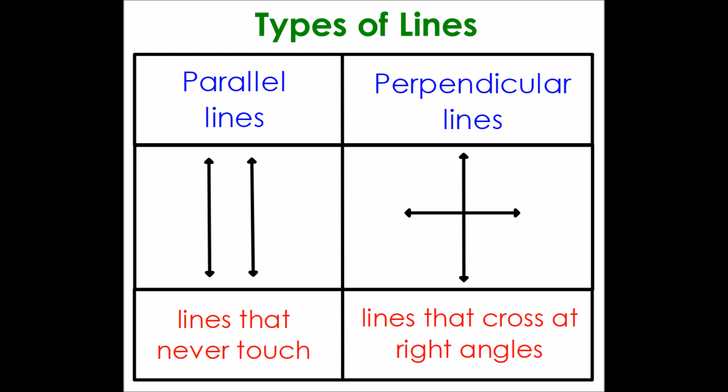And finally, types of lines. What's not on this image are intersecting lines — they're just lines that cross. Perpendicular lines are special types of intersecting lines; they are lines that cross at right angles. And then parallel lines are kind of the opposite of perpendicular lines — they are lines that never touch. So we'll be looking for 2D shapes, 3D shapes, angles, and lines on our geometry walk.